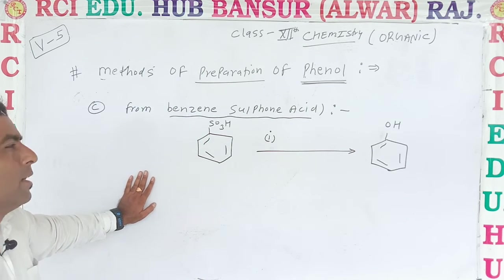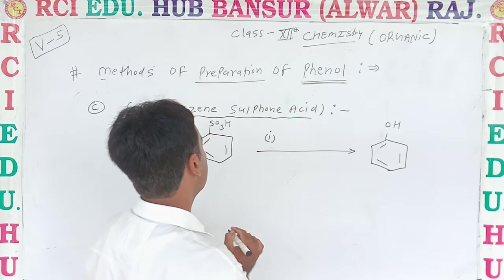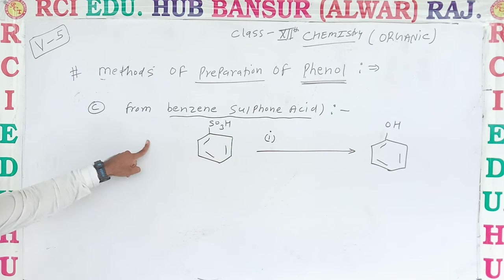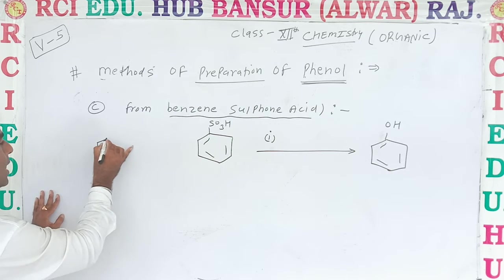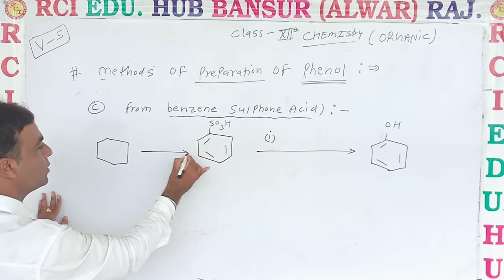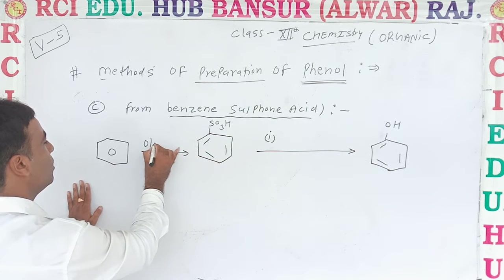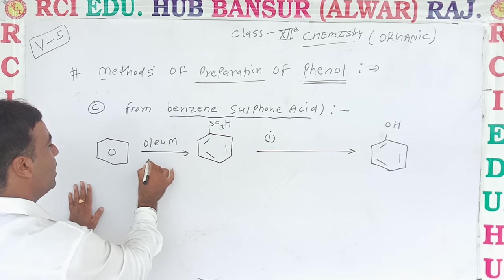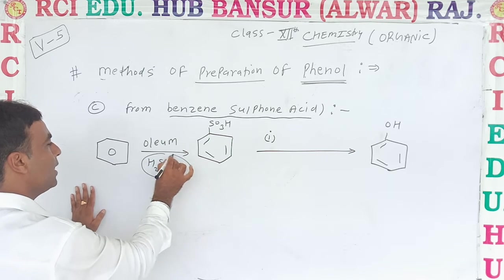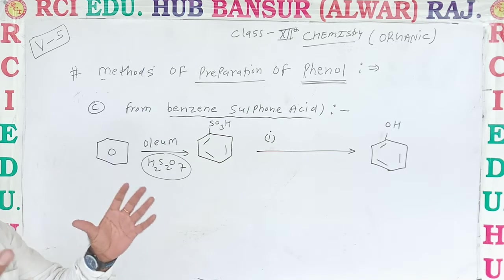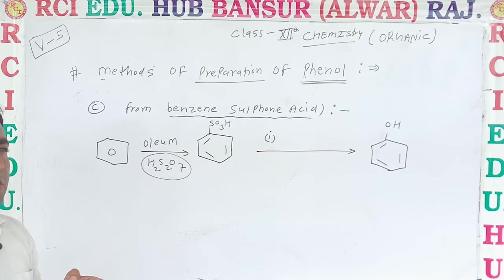What reagents are used? First of all, you can also make benzene sulfonic acid directly from benzene. For that you need to use oleum (H2S2O7). When two moles of sulfuric acid are combined, formation of oleum takes place.